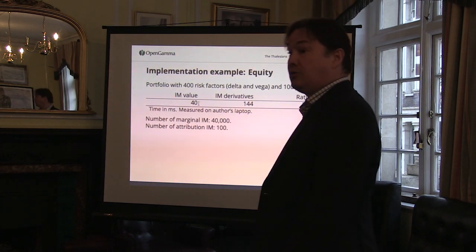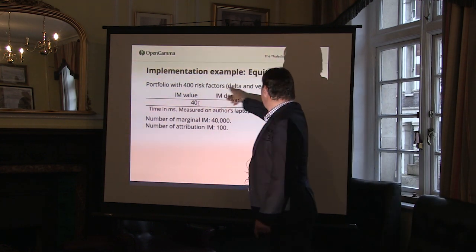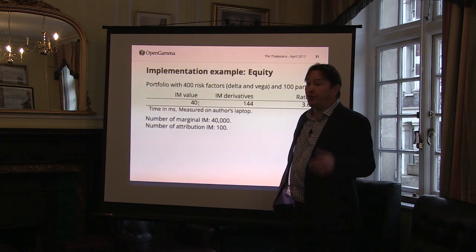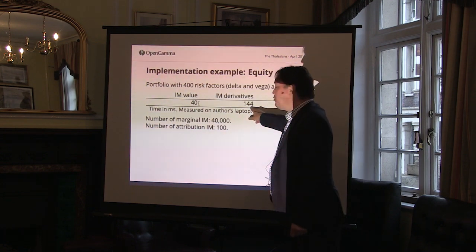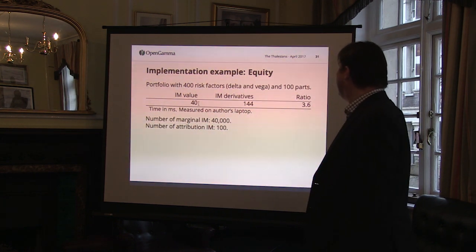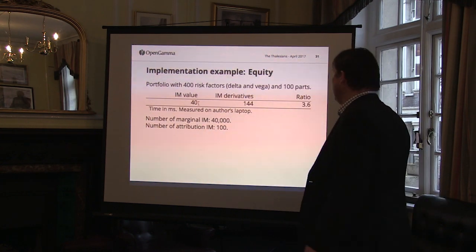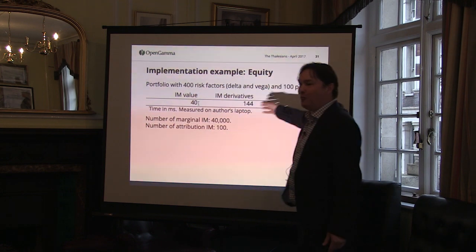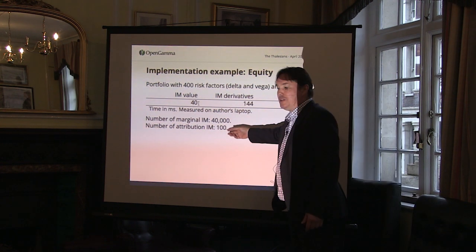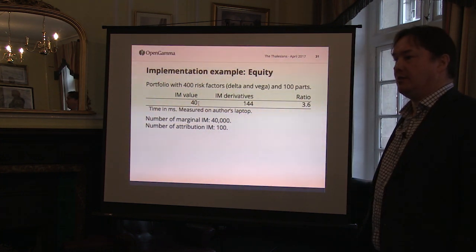Going back to my first magical slide: computing the capital for one desk took 40 milliseconds. Computing all 40,000 derivatives was 144 milliseconds. Adding them together for 100 sub-desks — adding numbers in a computer takes essentially zero — so computing those 40,000 or those 100 attribution numbers takes exactly the same time in practice. That's the type of result you can get with AD.